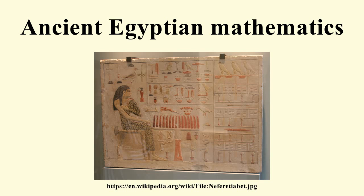The Egyptian Mathematical Leather Roll, for instance, is a table of unit fractions which are expressed as sums of other unit fractions. The Rhind Mathematical Papyrus and some of the other texts contain tables. These tables allowed the scribes to rewrite any fraction of the form 2/n as a sum of unit fractions.